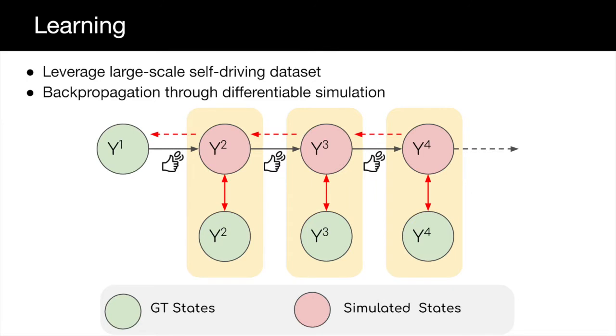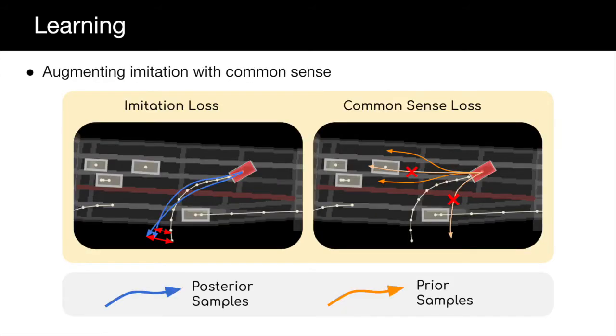We learn from demonstration obtained from a large-scale self-driving dataset, and in particular, we back-propagate through our fully differentiable simulation for learning. Furthermore, we augment the imitation objective with common sense by incorporating an additional differentiable collision loss.